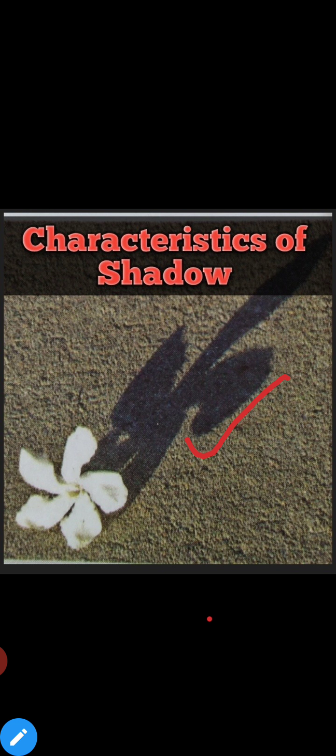Now next, the shadow shape does not resemble the actual shape. जरूरी नहीं है कि इसका actual shape ही आपको shadow में दिखे। And its size भी different different होता है। यह depend करता है position of the source of light पर।